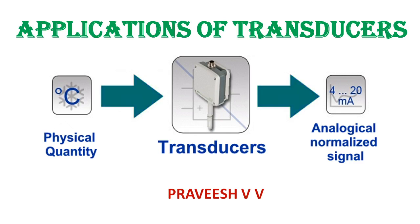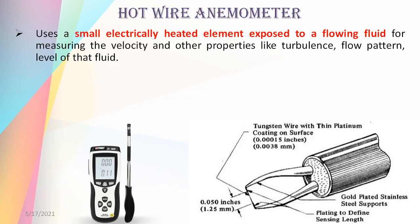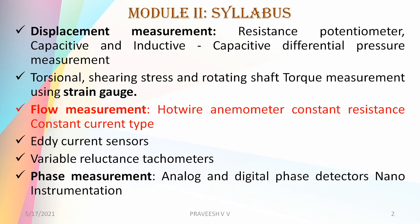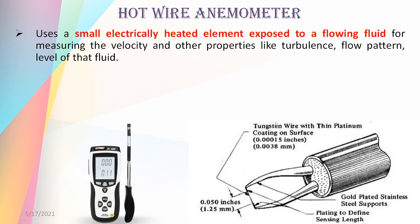Welcome to this video on industrial instrumentation and automation. We are discussing the application of transducers, and in this video we will be discussing flow measurement using a hot wire anemometer. A hot wire anemometer basically uses a small electrically heated element exposed to a flowing liquid, of which the flow is to be measured, for the measurement of velocity and other properties like turbulence and flow pattern.